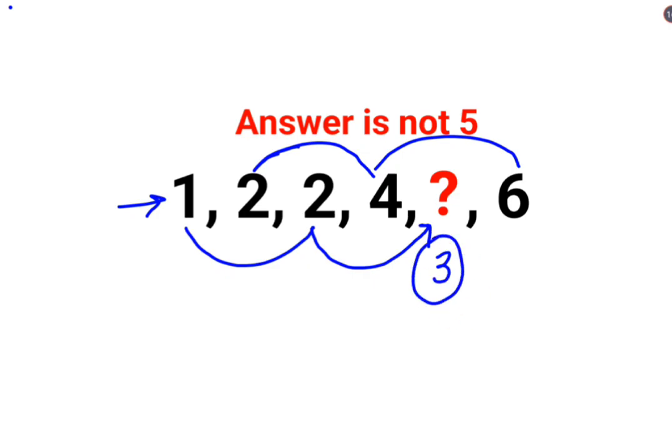And there is also another logic which says that this number is exactly half of this previous number. Similarly, 4 is exactly double of the previous number which is 2. Similarly, 6 is exactly double of the previous number which is 3, and 2 is exactly double of the previous number which is 1.